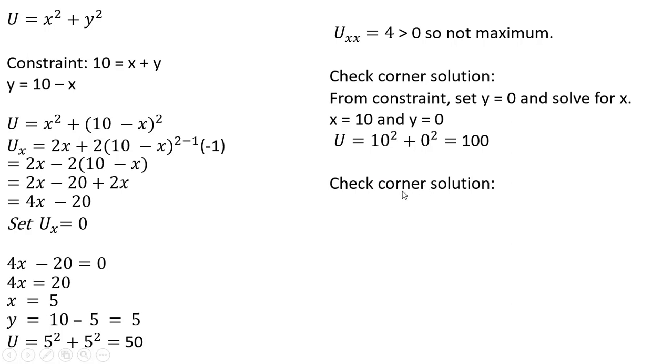We can also check the corner solution. If x equals 0, y will equal 10. And we plug that into our utility function and we get utility equals 100. So in either case, this consumer in this setup will either consume nothing but good x, in that case 10 units of good x, or nothing but good y, 10 units of good y.